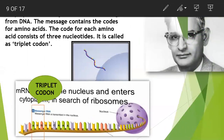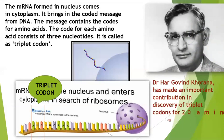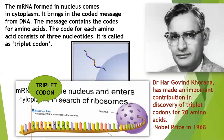Dr. Hargowind Khurana made an important contribution in discovering the triplet codon for all 20 amino acids in the human body. He found which code stands for which amino acid. For example, AUG stands for the amino acid called methionine. He won the Nobel Prize in 1968 along with his colleagues.